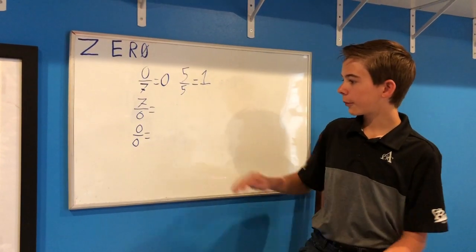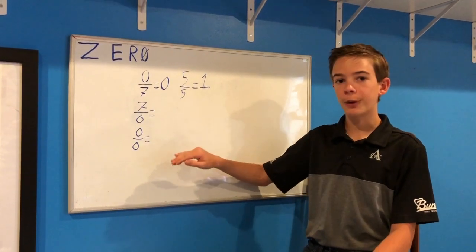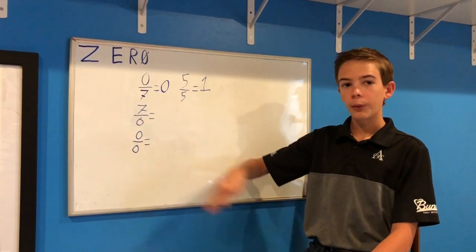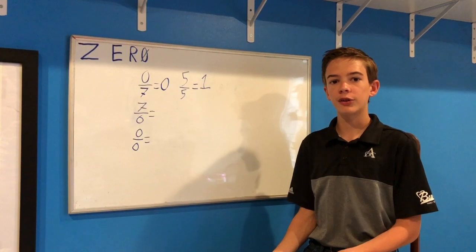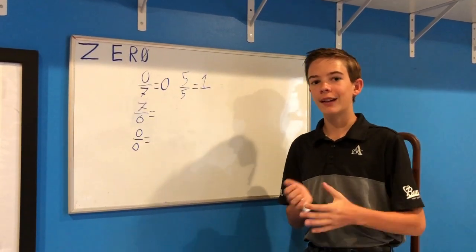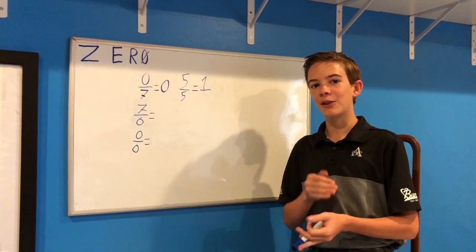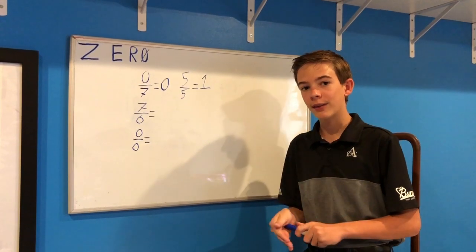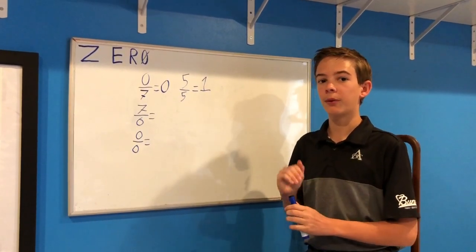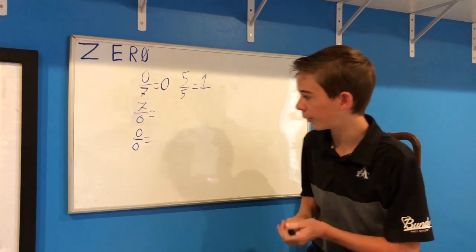One of the several ways mathematicians have used to combat the weirdness of zero over zero when it comes to functions is using L'Hôpital's rule. Fun fact: L'Hôpital wasn't the actual man who invented the rule — that was a different person. L'Hôpital was the person who just published the rule.